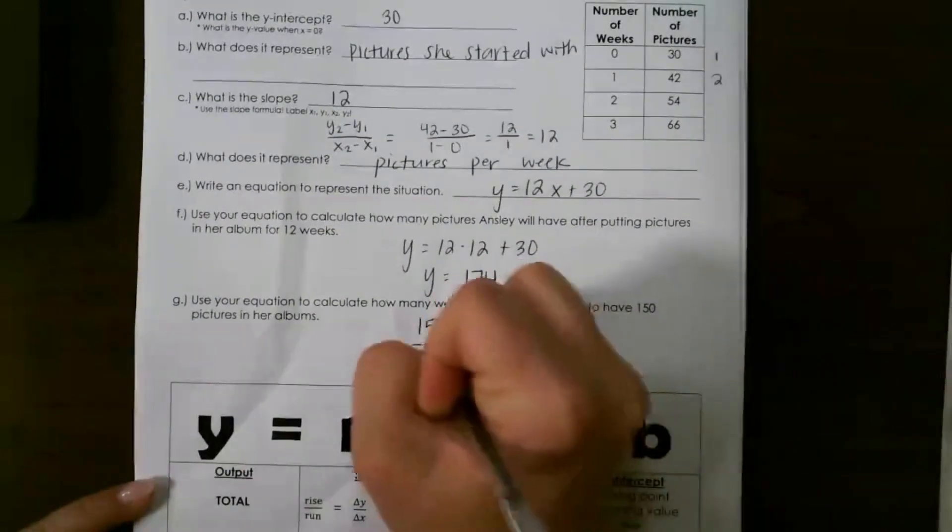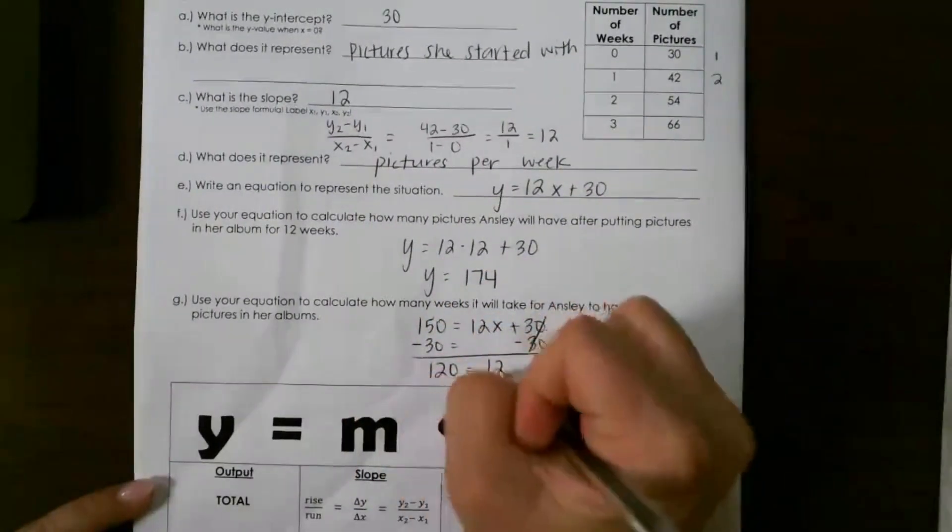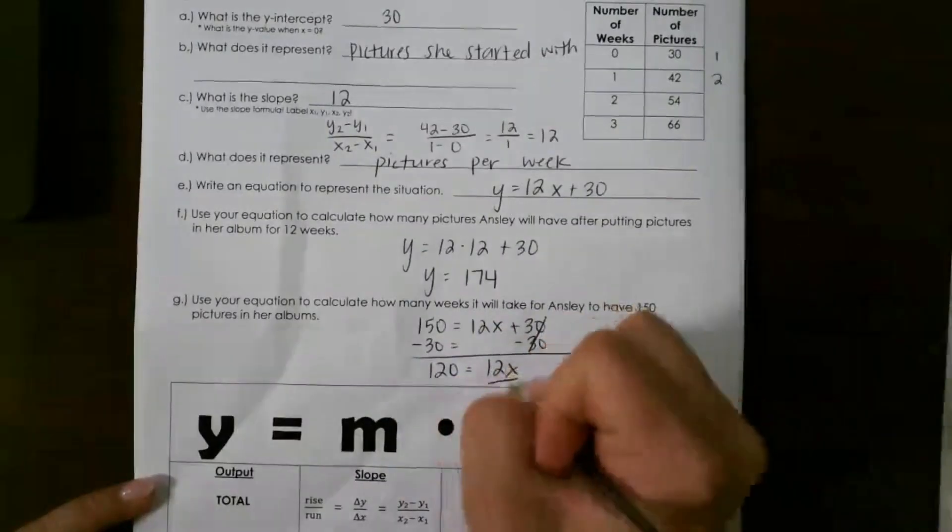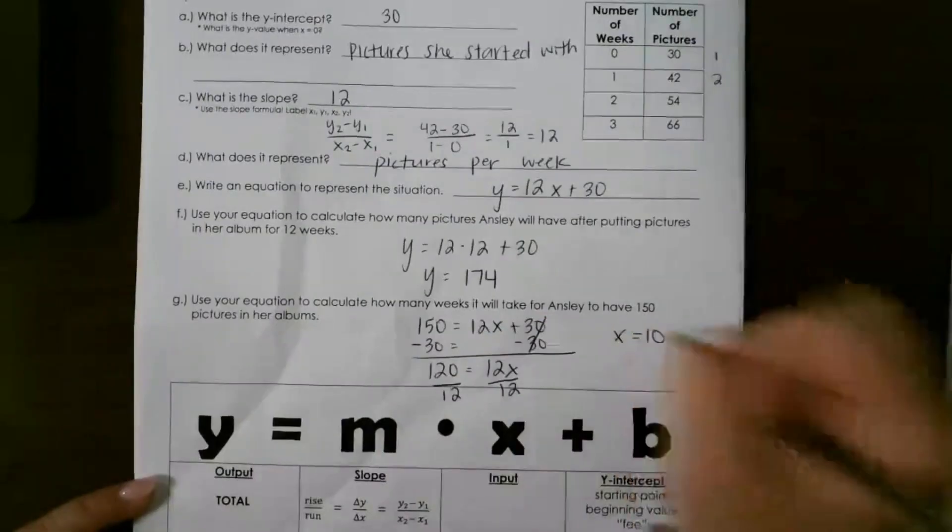So I'm going to subtract 30 from both sides which will leave me with 120 equals 12x. Then we divide by 12, so x equals 10.